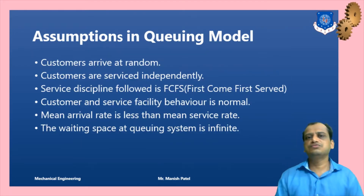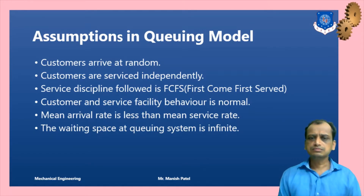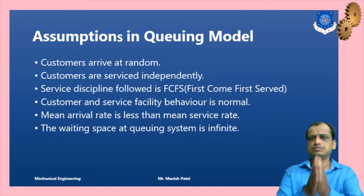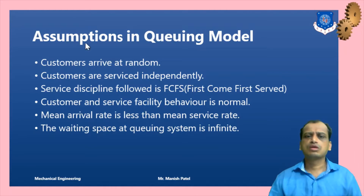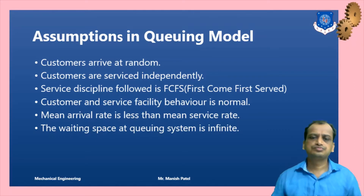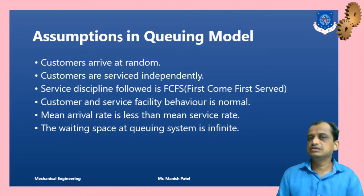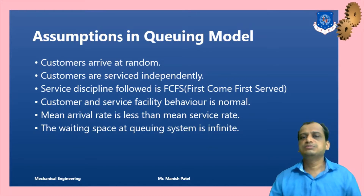So what are the assumptions of queuing theory? First, customers arrive at random and are served independently. The model is FCFS — first come, first served. Customer behavior is normal, service behavior is normal. The mean arrival rate is less than the service rate, because if it is the other way around, it is very difficult to manage the queue. The waiting space is infinite.